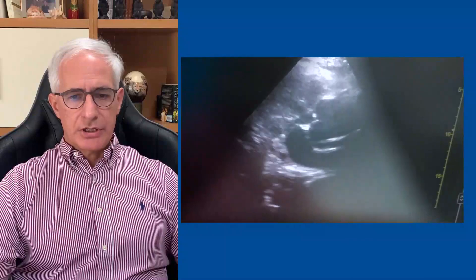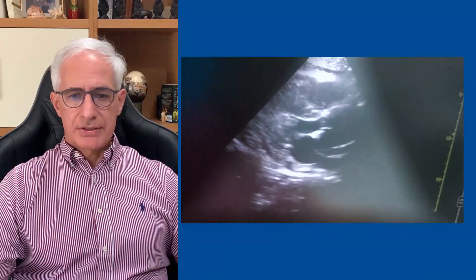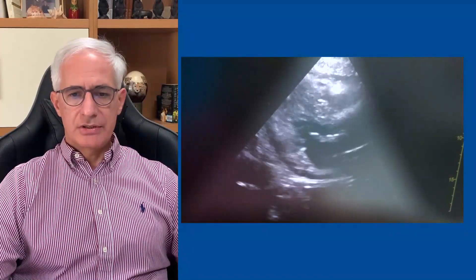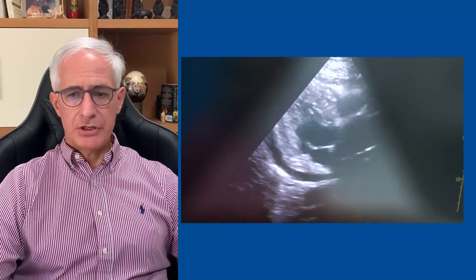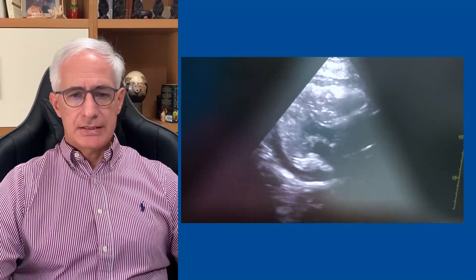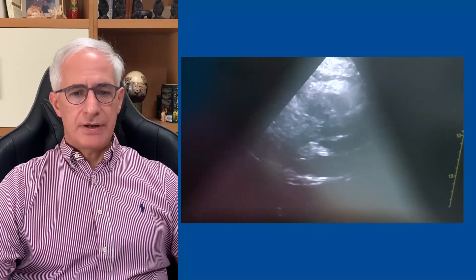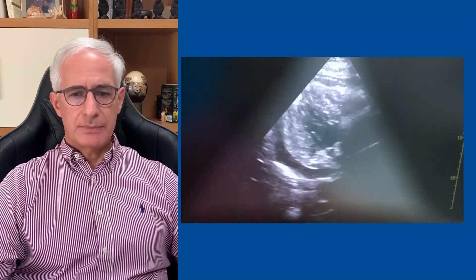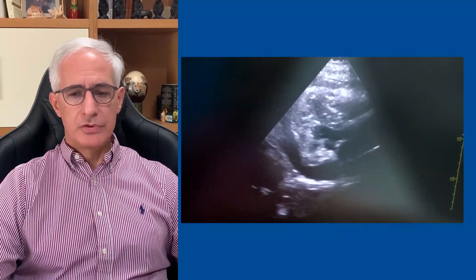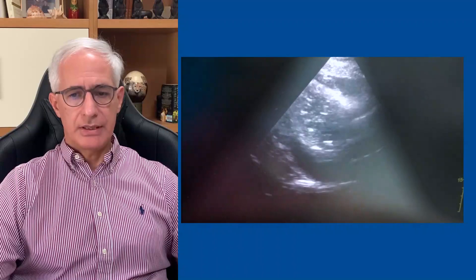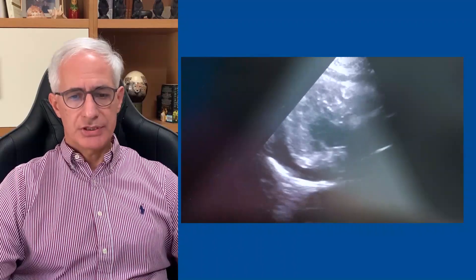Our illustration represents a case of distal aortic dissection with proximal expansion that led to a fatal aortic root rupture, coinciding with the focused echocardiography performed in the emergency department.